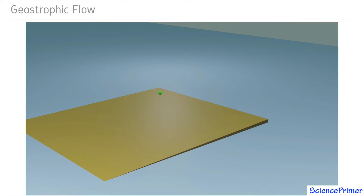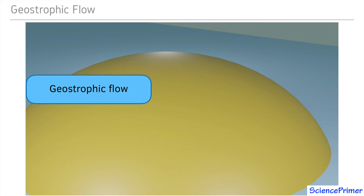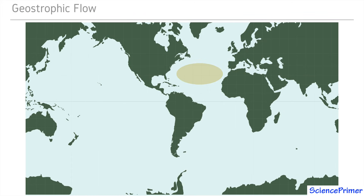This can create some seemingly counterintuitive behavior. If instead of a plane the ball was on a small hill, it would roll around the hill instead of down it. This is geostrophic movement, or as used in fluid dynamics, geostrophic flow. It is important to understand that for this type of motion to occur, the slope has to be extremely small and be extended over a very large area, like for example a large portion of an ocean basin.